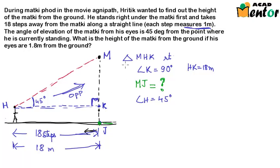And what is the ratio that involves the opposite side as well as the adjacent side? Because we know the length of HK. So yes, it's tan. So tan of angle H is equal to MK by HK.